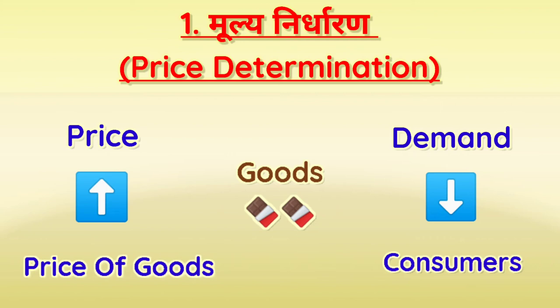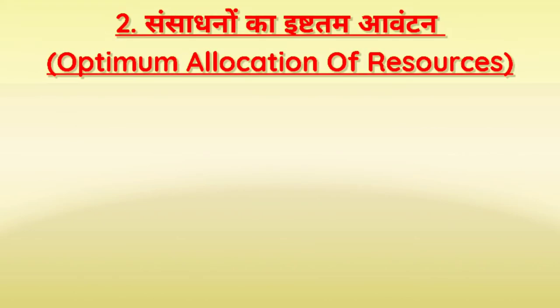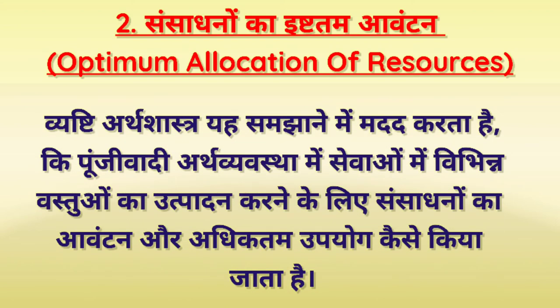Number 2: Sansadhanu ka Ishtitam Aavantan — Optimum Allocation of Resources. आवंटन मतलब होता है बाँटना। सुक्ष्म अर्थशास्त्र यह समझाने में मदद करता है कि पूँजीवादी अर्थव्यवस्था में विभिन्न वस्तुओं का उत्पादन करने के लिए संसाधनों का आवंटन और अधिकतम उपयोग कैसे किया जा सकता है।